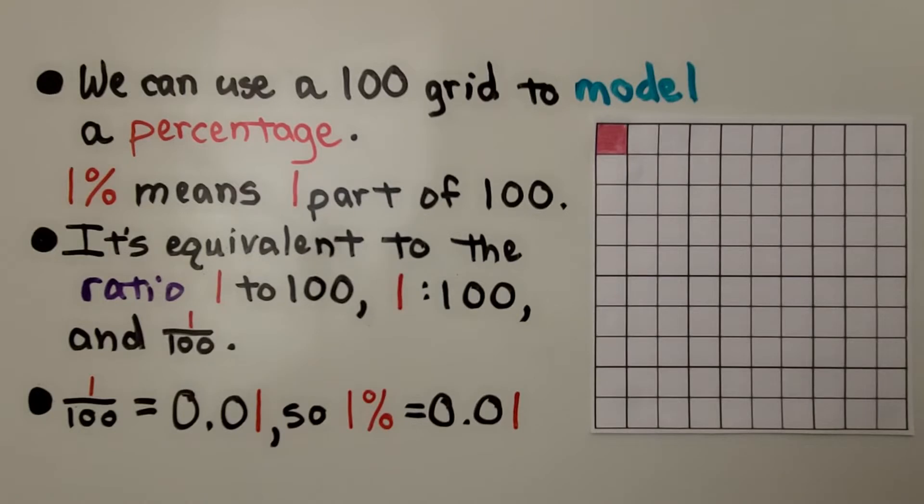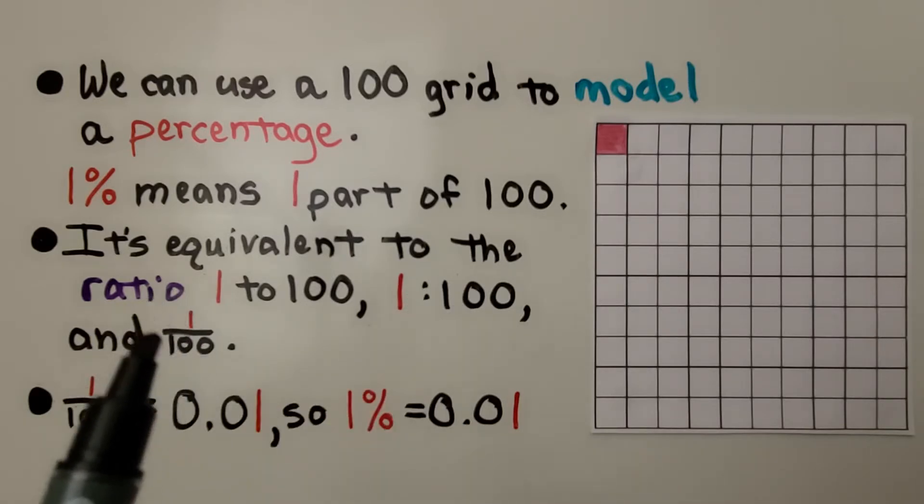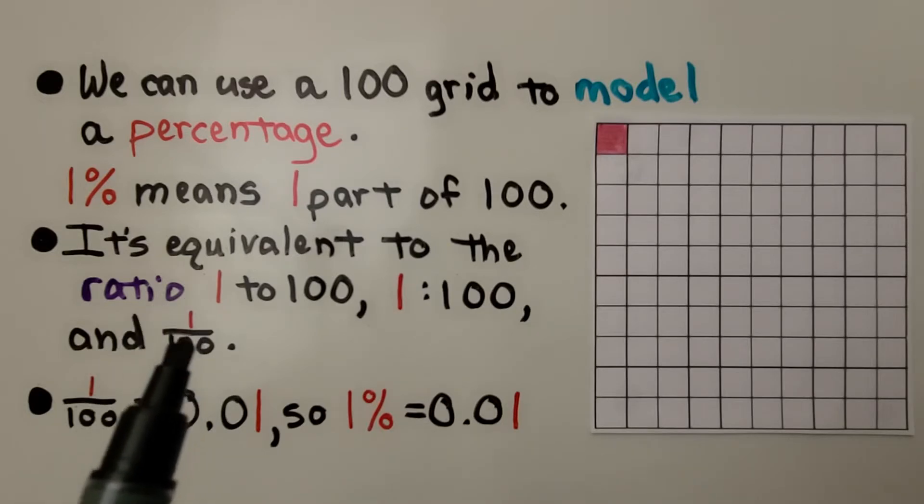We can use a 100 grid to model a percentage. One percent means one part of 100. It's equivalent to the ratio 1 to 100. We can write it with the colon as 1 to 100 and 1 to 100 as one hundredth.